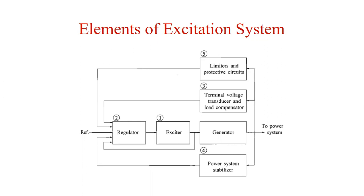The power system stabilizer provides an additional input signal to the regulator to damp power system oscillations. Some commonly used input signals are rotor speed deviation, accelerating power, and frequency deviation. The fifth part of the control circuit is the limiters and protective circuit. This includes a wide array of control and protective functions which ensure that the capability limits of the exciter and the synchronous generator are not exceeded. Commonly used functions include the field current limiter, maximum excitation limiter, terminal voltage limiter, volts-per-hertz regulator and protection, and under-excitation limiter.